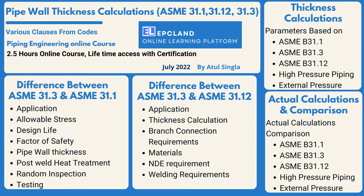Then we'll look into two codes: one is process piping, and another is the code for hydrogen piping and pipelines — 31.12. We'll look into various differences with respect to application, thickness calculation, branch connection requirements, material, non-destructive examination, and welding requirements, to understand how these two codes are different from each other.